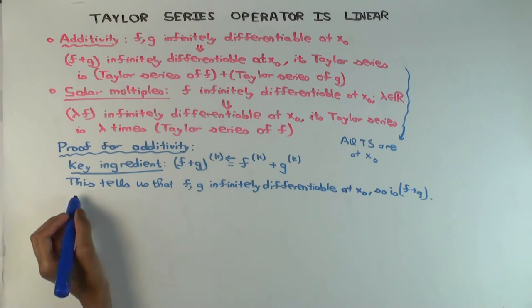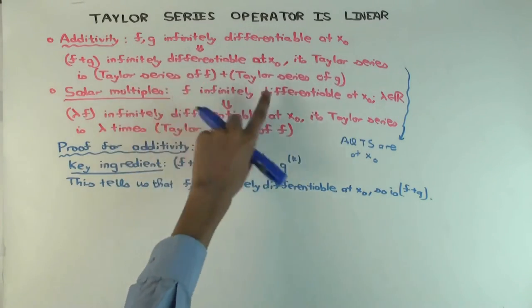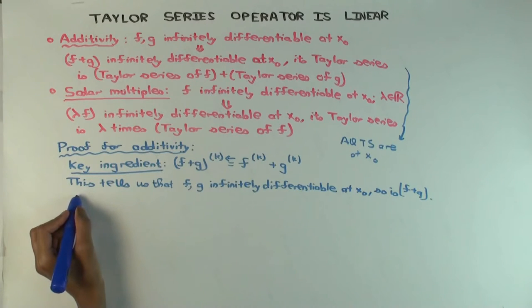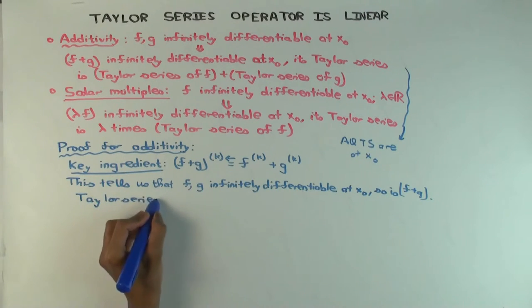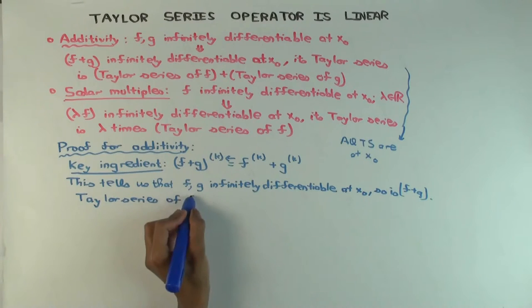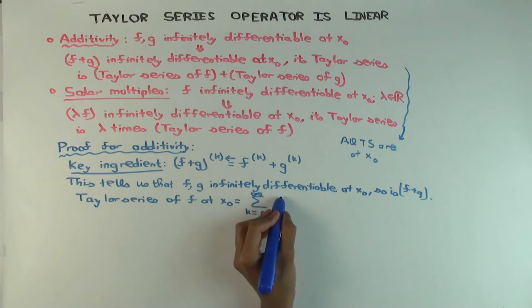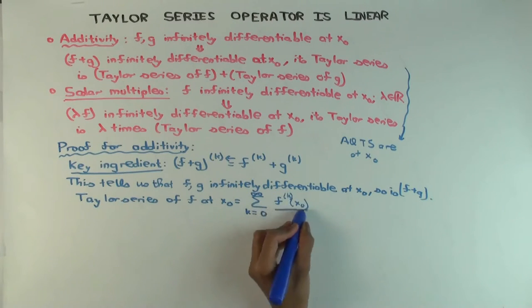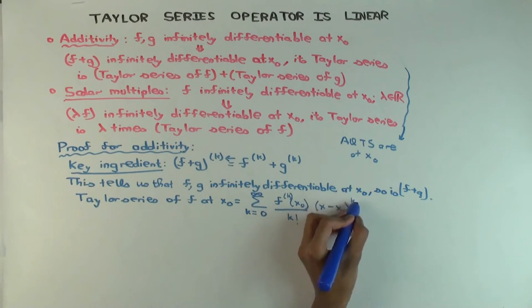What's the Taylor series of f at x0? So we've settled this part. Now we have to show that the Taylor series of the sum is the sum of the Taylor series. So Taylor series of f at x0 is? You want me to say the whole thing? Yeah, the expression. The summation, the sigma notation? Yeah. Okay. Summation k equals 0 to infinity, f^(k)(x0) over k factorial times (x minus x0) to the k.